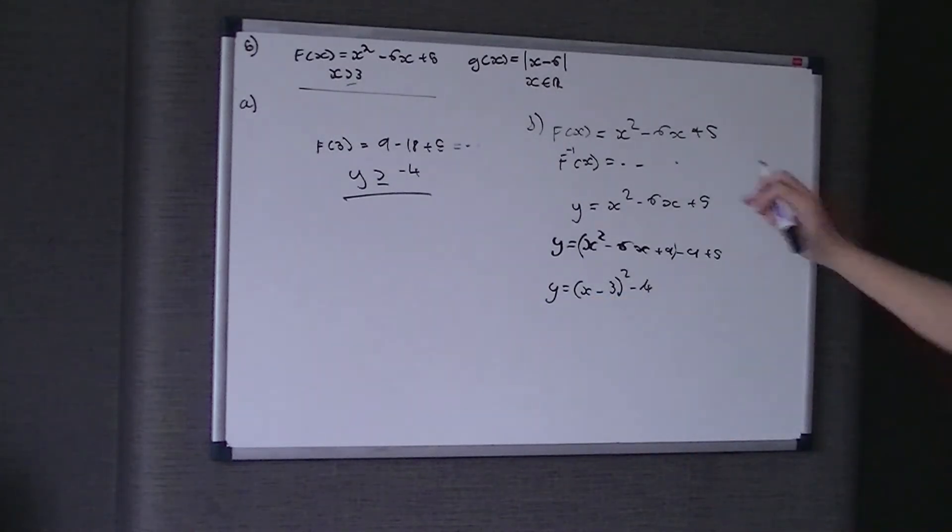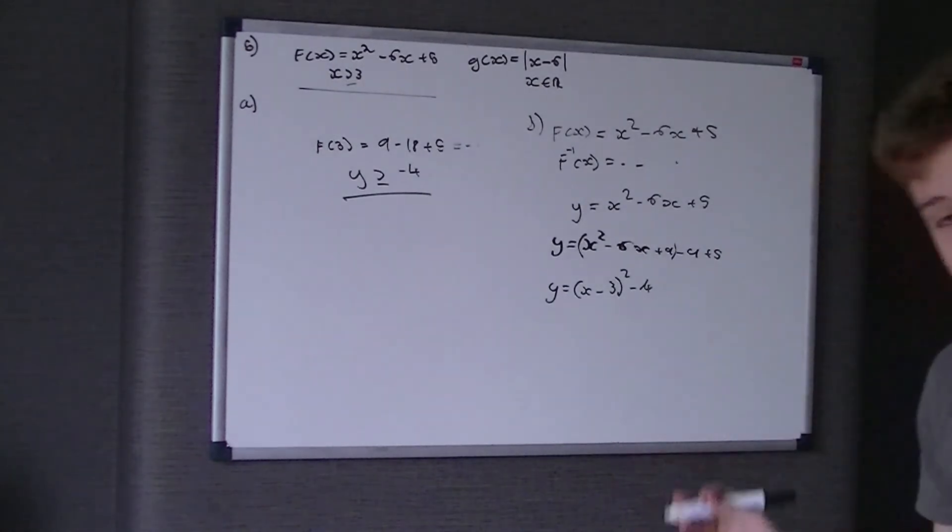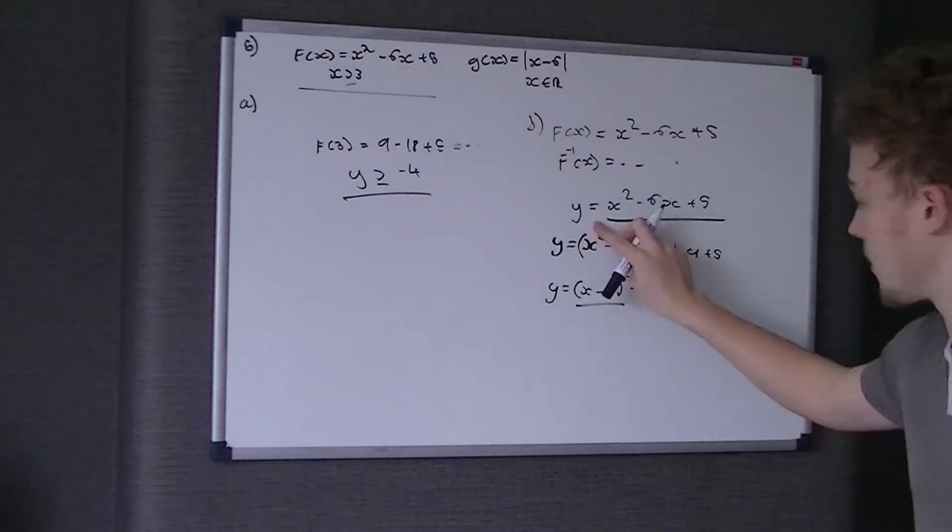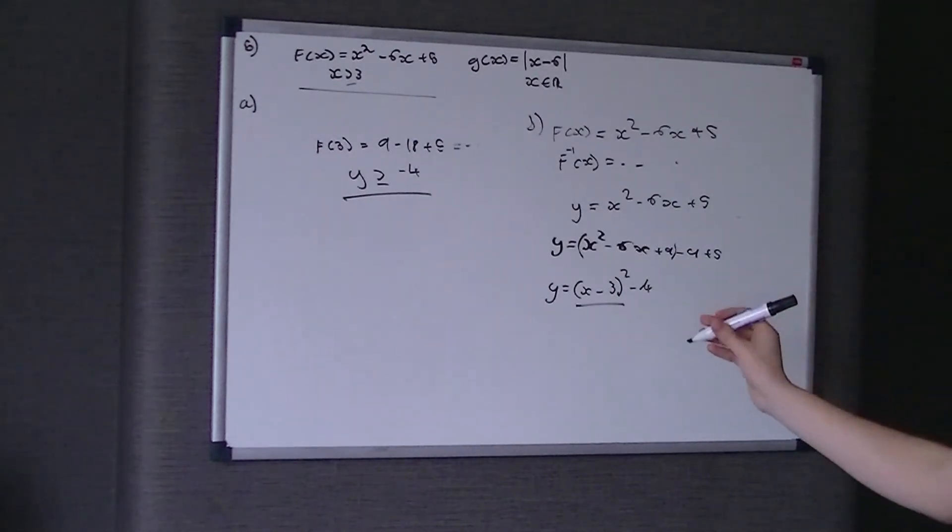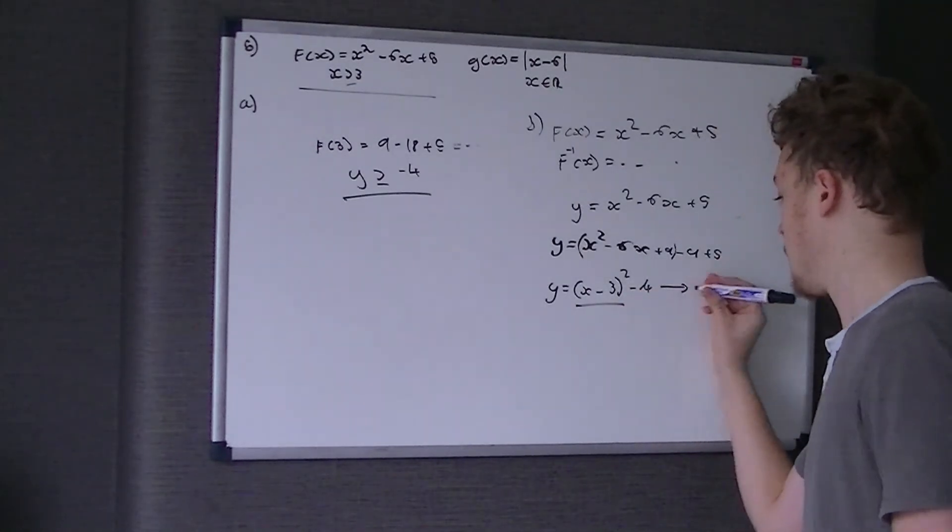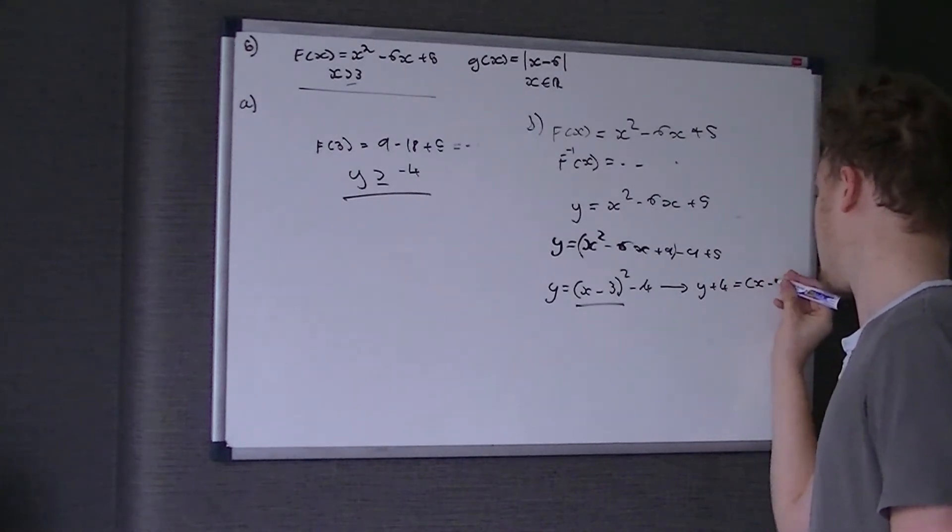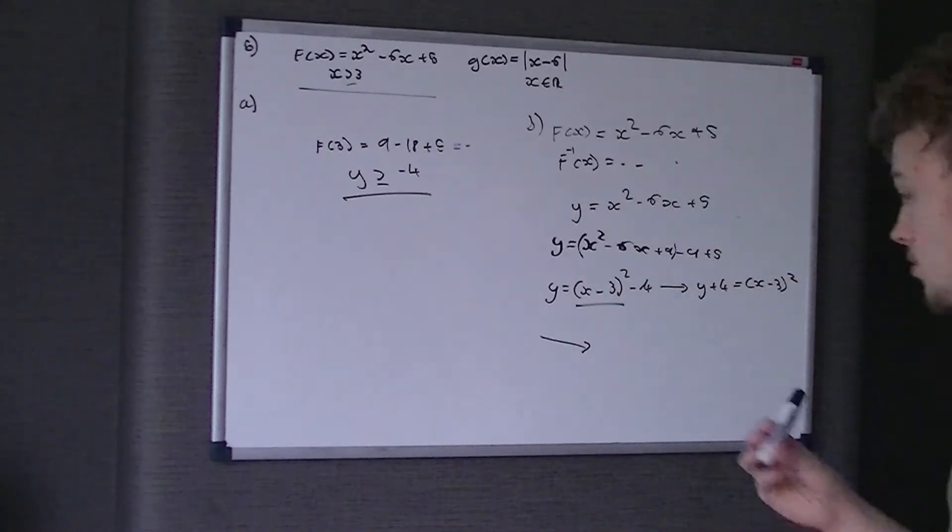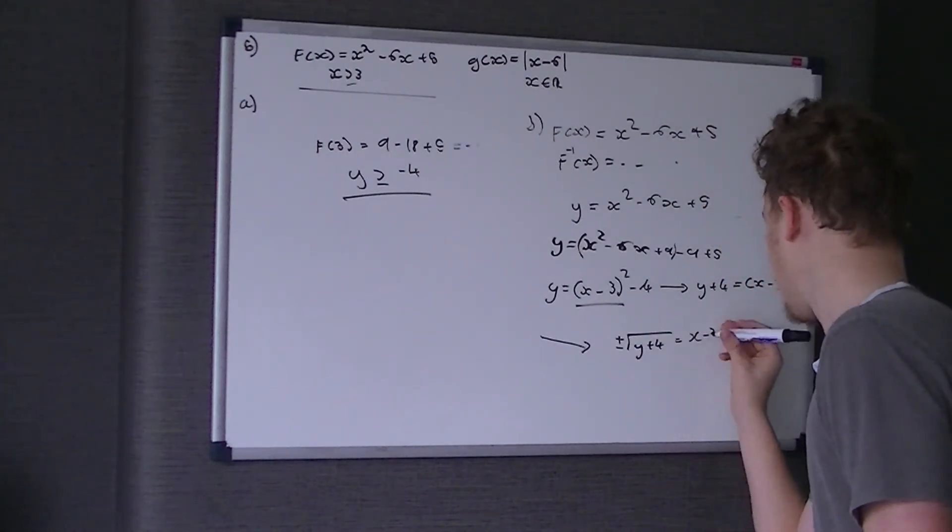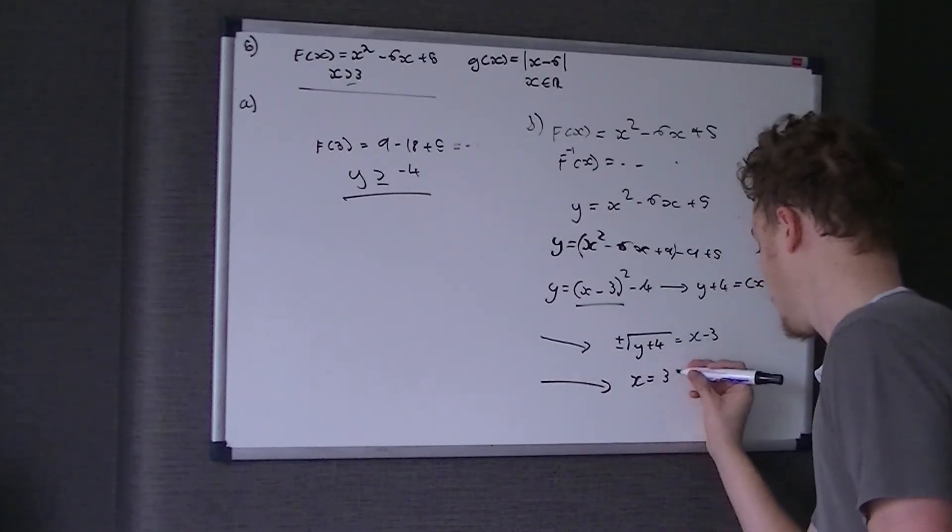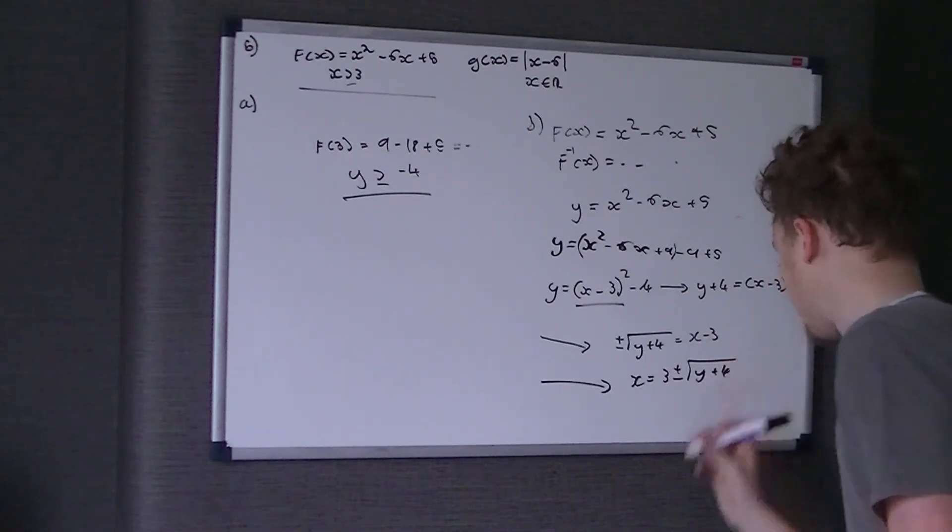Simplifying that gives 5 take 9 is minus 4. So that's why completing the square is a way of solving it, because it's just putting it in a different format. What we need to do here is add 4 to both sides, so y plus 4 equals x take 3 all squared. Square root both sides, so it's plus or minus the square root of y plus 4 equals x take 3. Rearrange this to get x the subject, so x is 3 plus or minus root y plus 4.